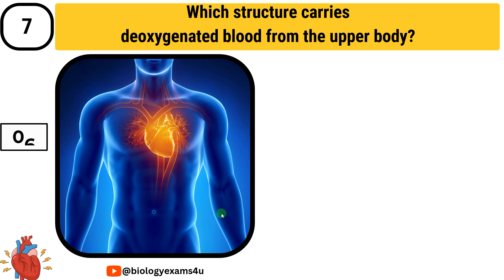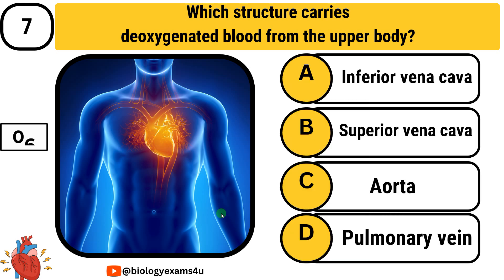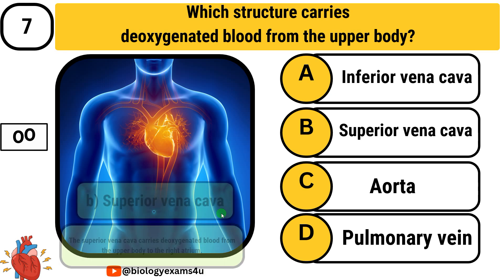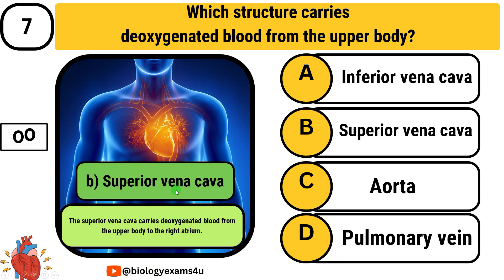Question number 7: Which structure carries deoxygenated blood from the upper part of the body? Option A: inferior vena cava. Option B: superior vena cava. Option C: aorta. Option D: pulmonary vein. The answer is superior vena cava. The superior vena cava carries deoxygenated blood from the upper part of the body to the right atrium.